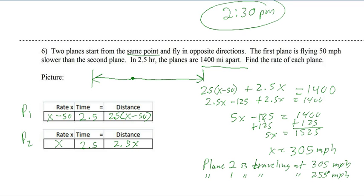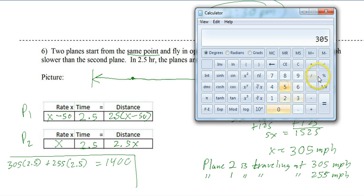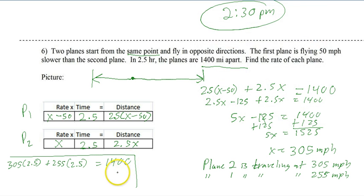Right? And then now we just have to check it. It's the same way we've checked before. So we have this speed times the time, and this speed times the time, and we should have a total distance there. So if we have 305 miles per hour for 2.5 hours plus 255 miles per hour for 2.5 miles, that should give us a total distance of 1,400. Plug it in. 1,400 checks out, and that's it. That's uniform motion. Thank you.